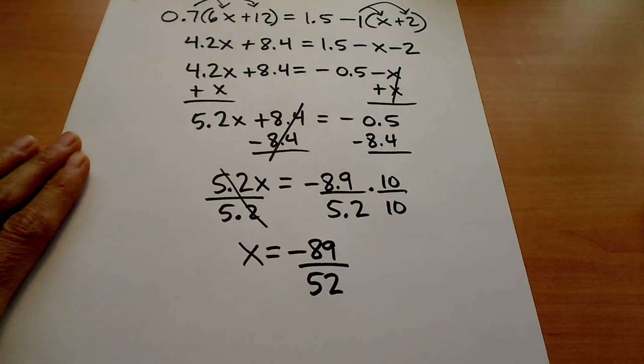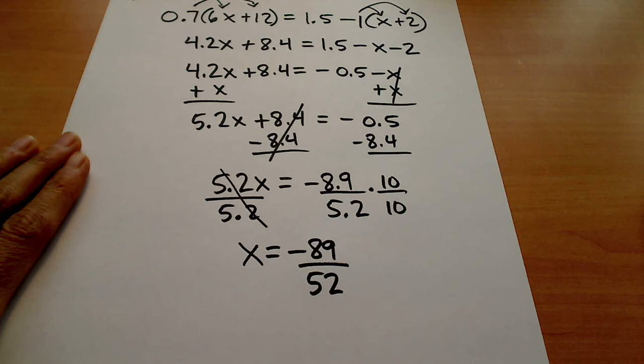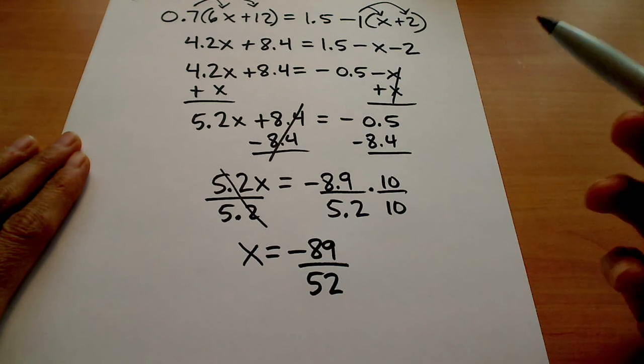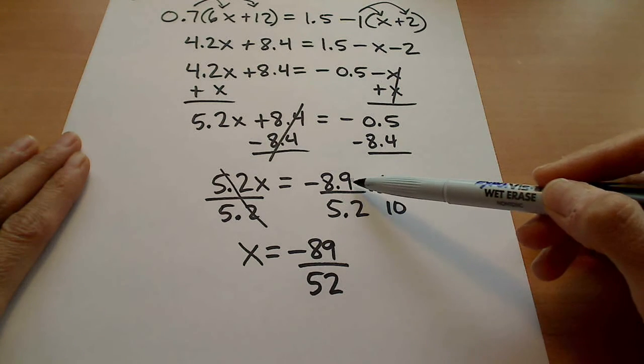Multiplying in the top, that negative 8.9 becomes negative 89, and the 5.2 becomes 52. And so now we're actually in a fraction that doesn't have any decimals associated with it.